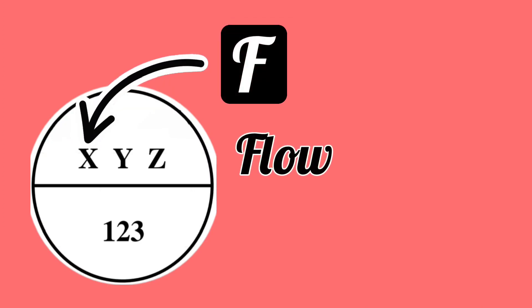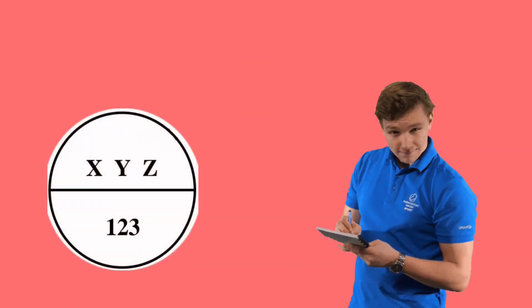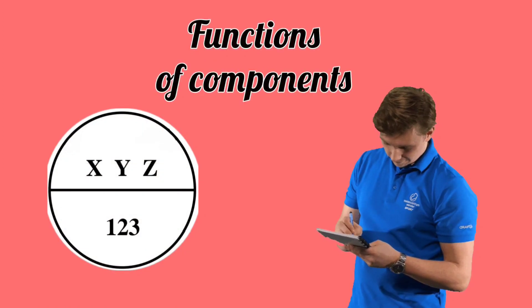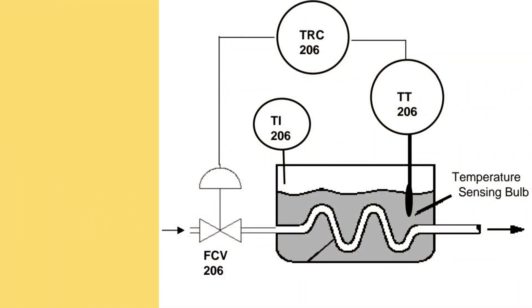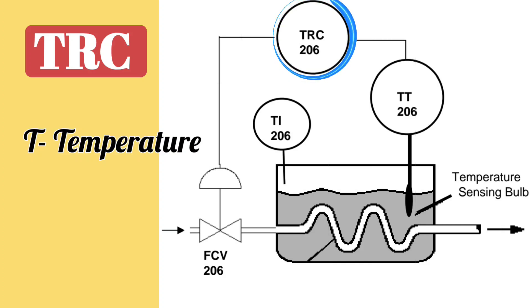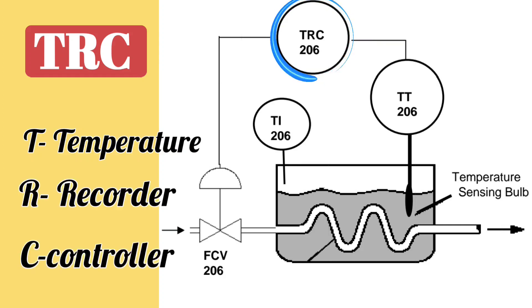The rest of the letters tell the functions of the components. Let's take a small example. Here, TRC stands for T means temperature, R means recorder, and C means controller, which records or measures the temperature and also controls.